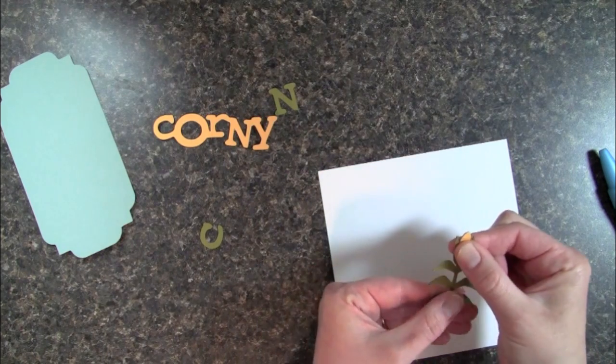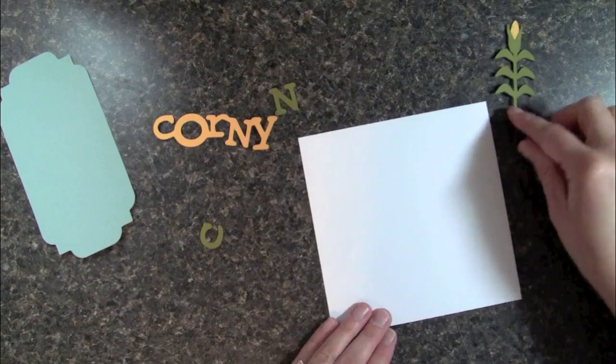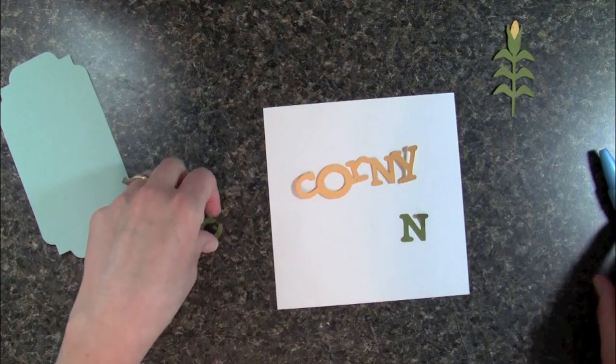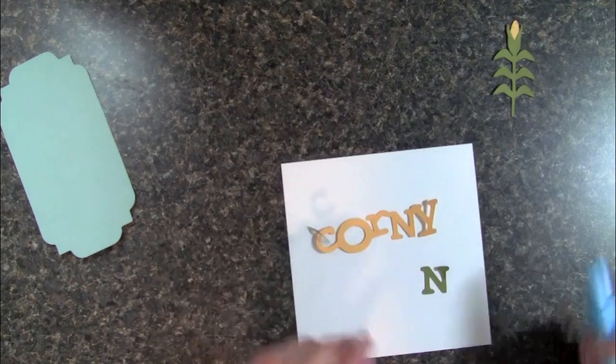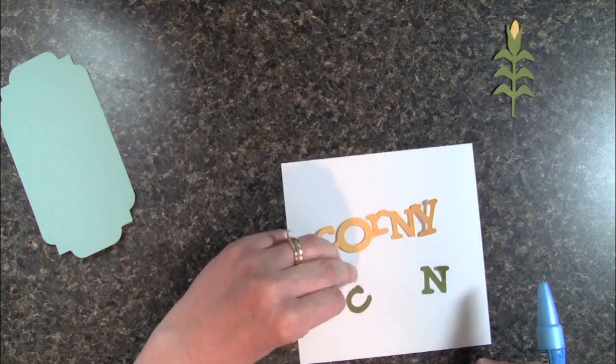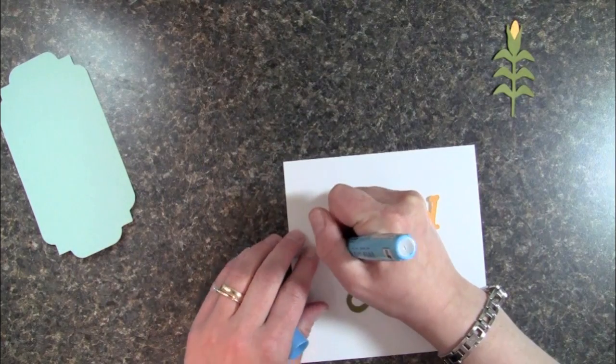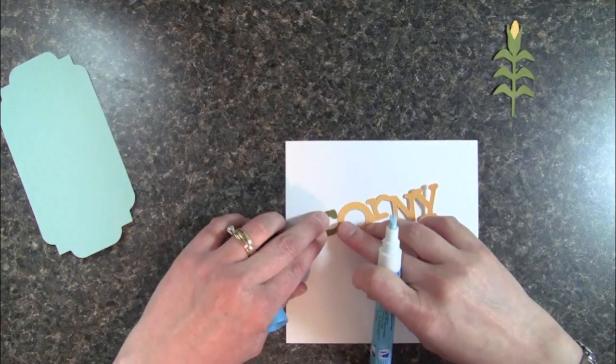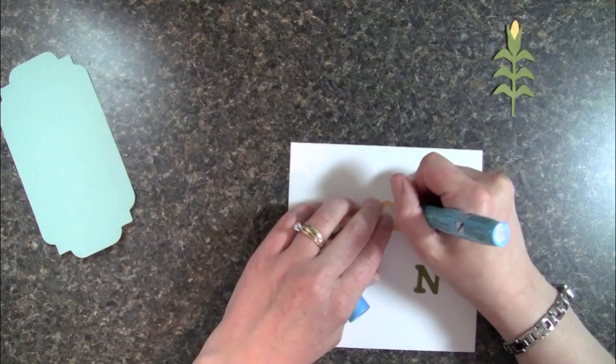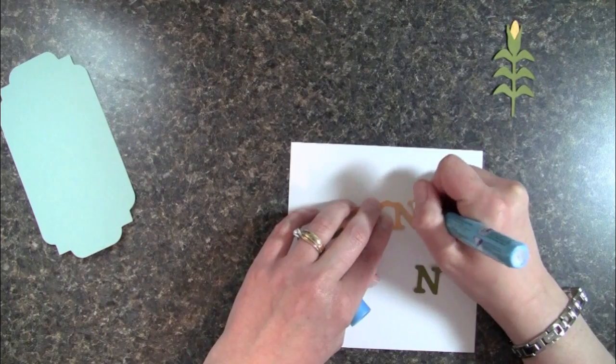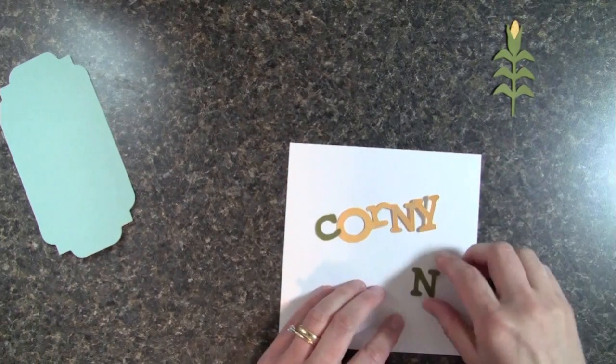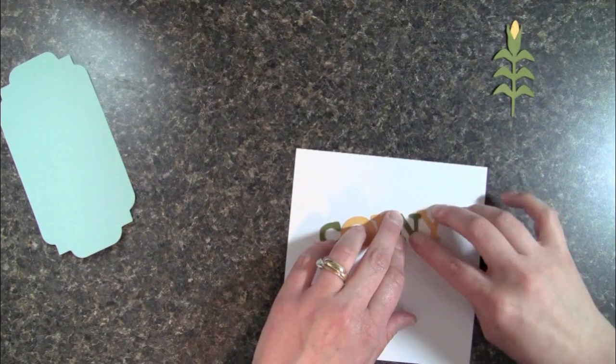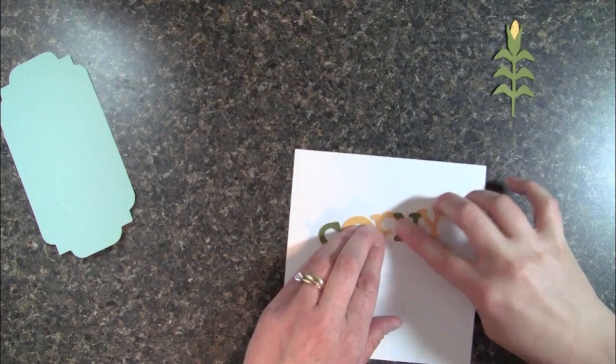Okay, so that's our corn stalk and we're just going to take our words here, and again these are cut at six and three-quarters. Things are sticking to my fingers. So I'm just going to add my C and my N, and then once I'm done with that we can go ahead and start putting our card together. There we go.